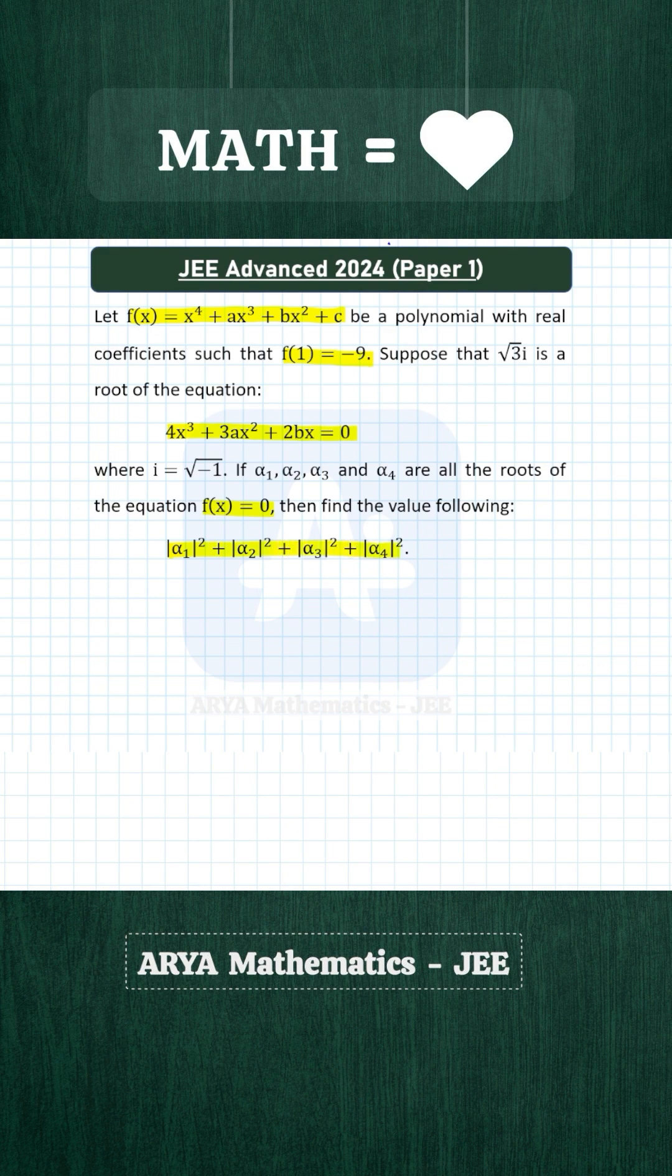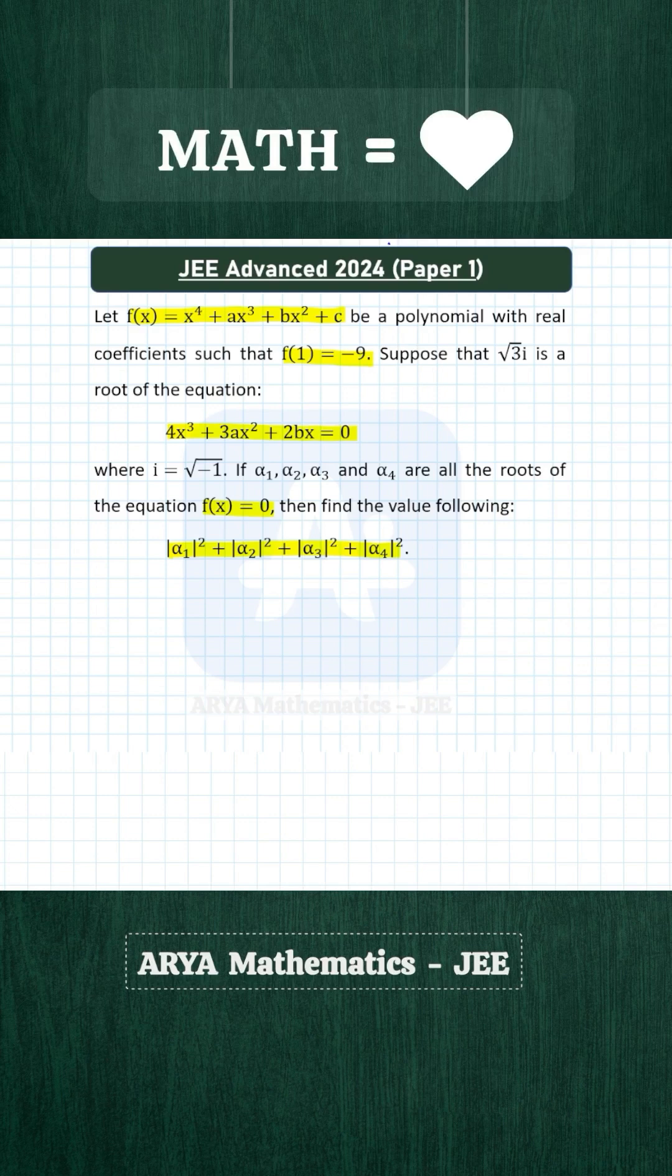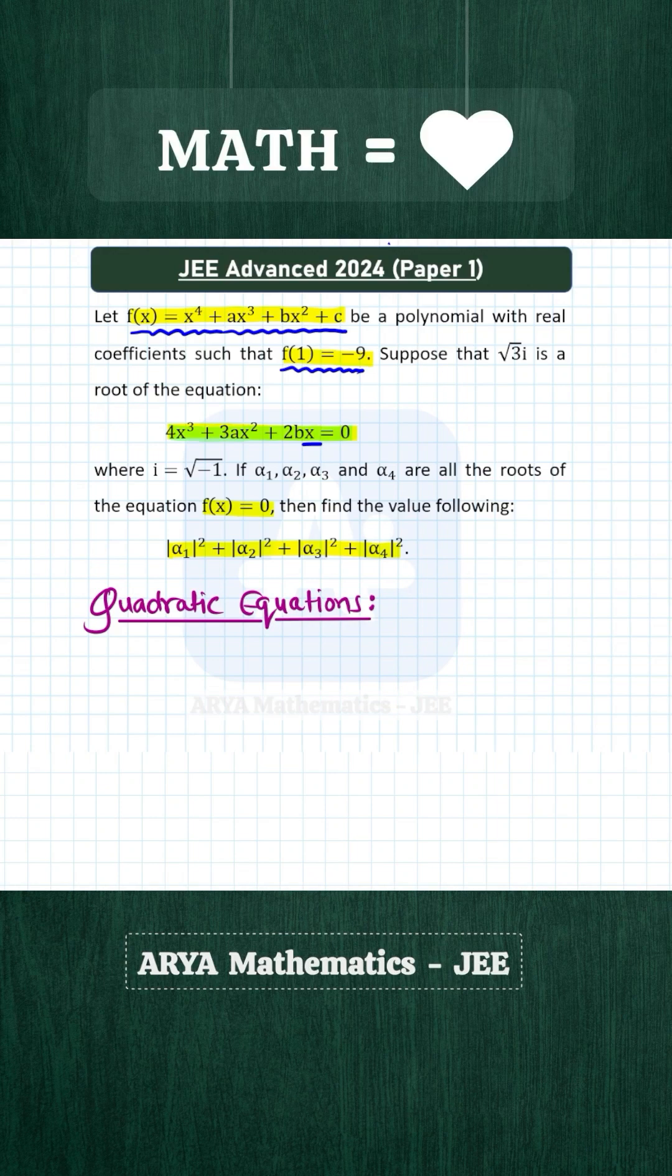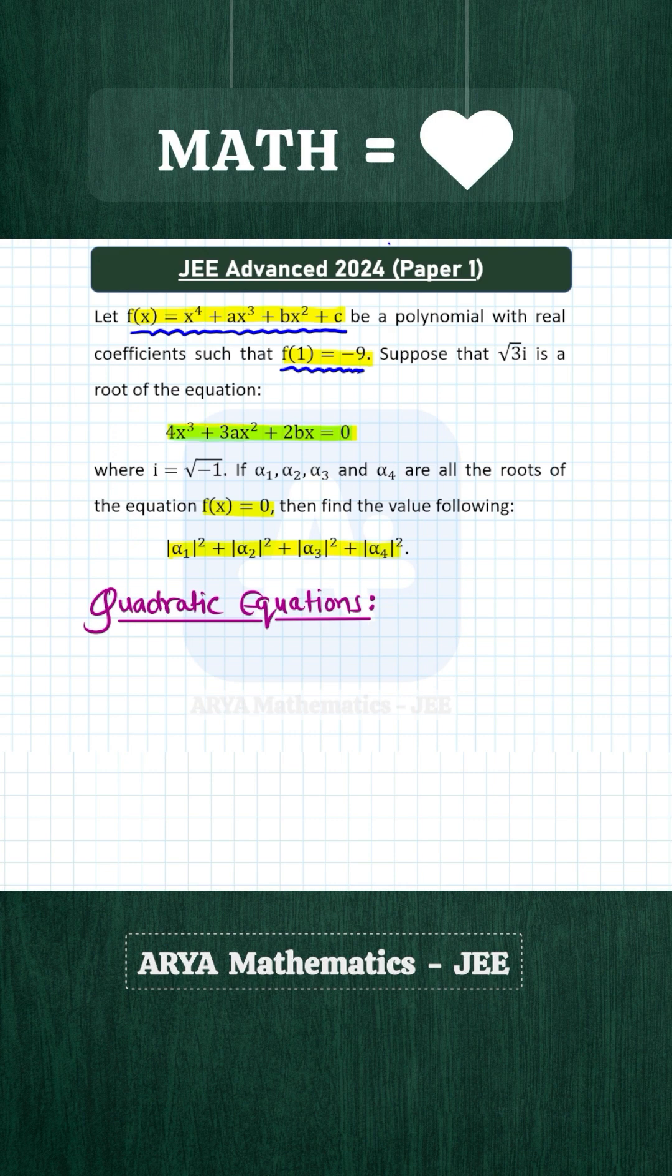This is a very interesting problem from quadratic equations and complex numbers. For this cubic equation in x, one root is √3i and as you can see there is no constant term. So obviously x = 0 will also satisfy this equation, and we know that imaginary roots of a polynomial equation with real coefficients always occur in conjugate pairs.